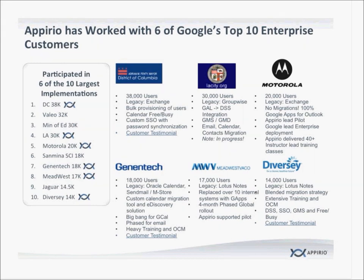Genentech illustrates two different deployment approaches: what's often called a big bang or all-in approach, where everybody goes live across the same very short period — generally a week — as opposed to a phased migration by business group or geography. Genentech had a hybrid model: they went live with Calendar all at once but did a phased model for the mail portion. They also had very heavy early use of the collaboration side — Docs, Sheets, Presentations, and Sites — and continue to be one of the largest deployments. They've also done unique things around their mobile solution strategy.